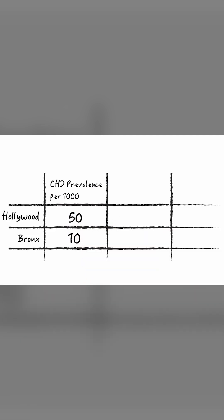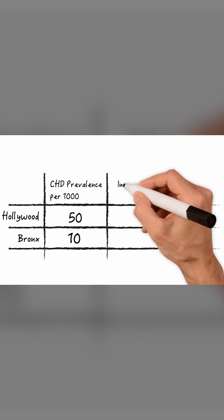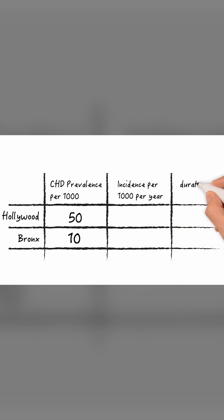To the person who's not familiar with the fact that prevalence is not a measure of risk but rather a measure of the burden of the disease, it looks like folks from Hollywood are at an increased risk of CHD. But that conclusion is not true at all. Let's look at the incidence rates and duration of disease in both locations. Incidence is 5 per 1,000 per year in both locations.